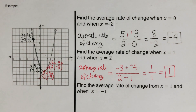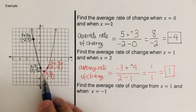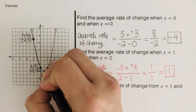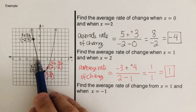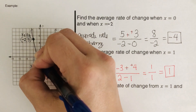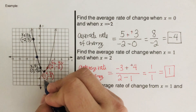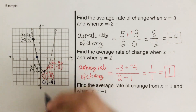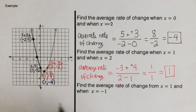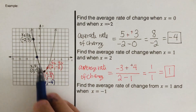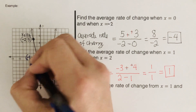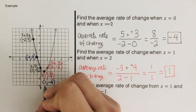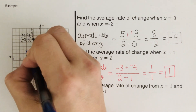Did you get positive 1? Good, perfect. Now let's move on to the next problem. When x is 1, it's the same dot — that's the point 1 and negative 4. And when x is negative 1, the dot gives us the point negative 1 and 0. We label these as x sub 1, y sub 1, x sub 2, y sub 2.